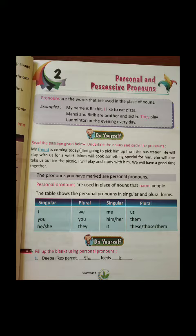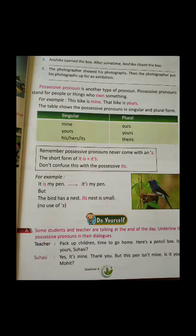Plural hai to we, you, they, us, them, those or them use karenge. Next, page number nine — it's possessive pronouns.